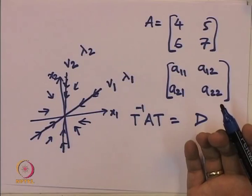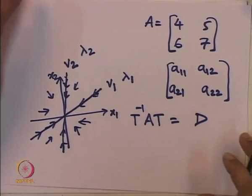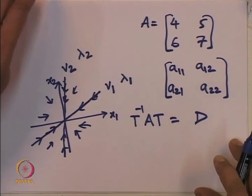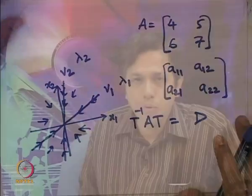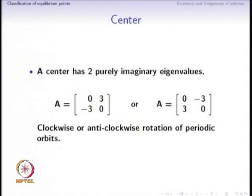Our assumption so far has been that both eigenvalues have the same sign. When they have opposite signs, that is the next topic. Before seeing opposite-sign eigenvalues, we will look at what a center is — the situation when A has purely imaginary eigenvalues.